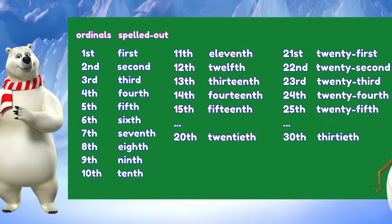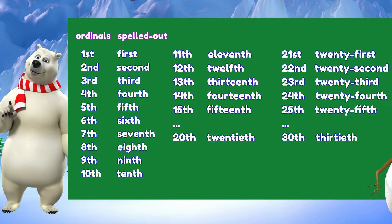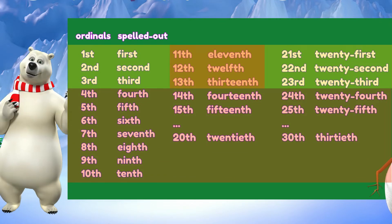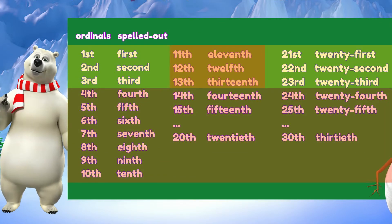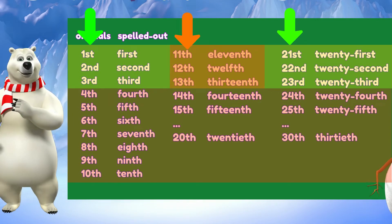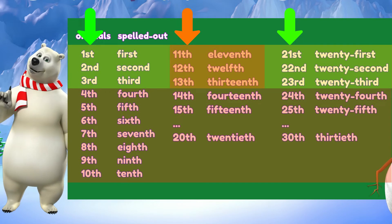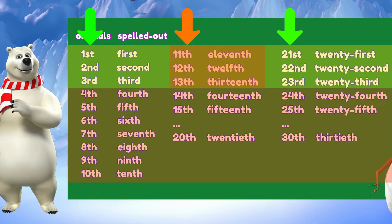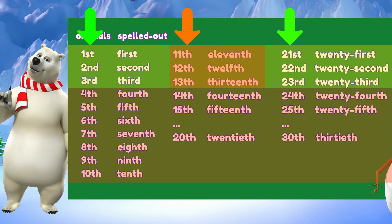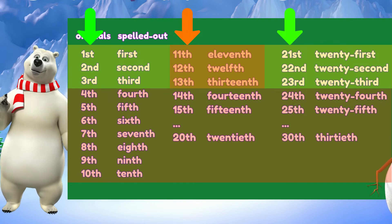Let us show you a list of some of the ordinal numbers and how they are written. Here you will see a pattern in which ordinal numbers do and do not end with th. Except for eleventh, twelfth, and thirteenth, all other ordinals ending with numbers one, two, and three use st, nd, and rd respectively. The rest end with th.